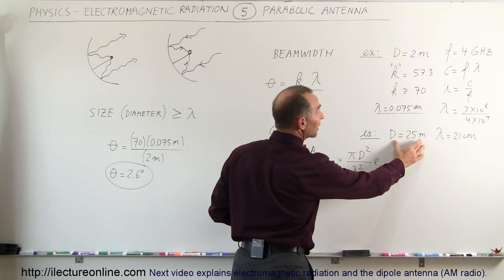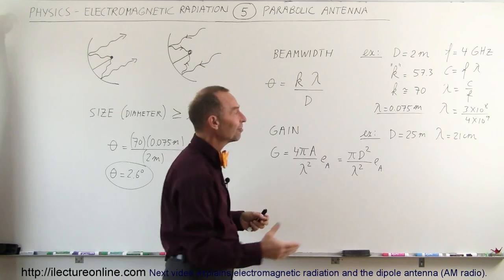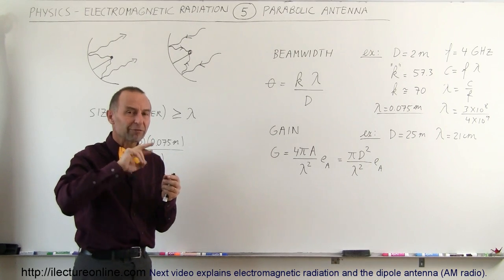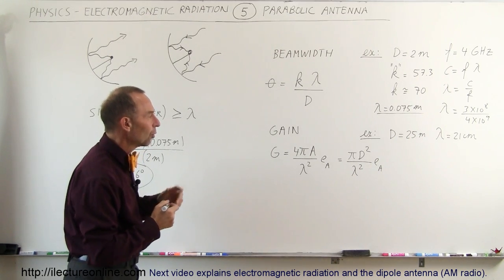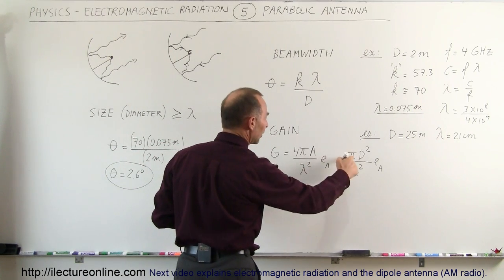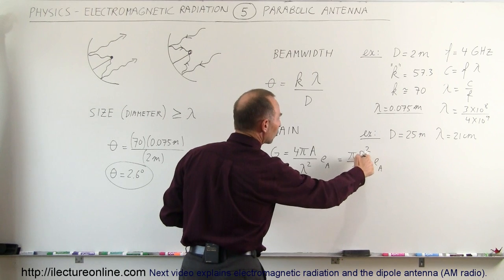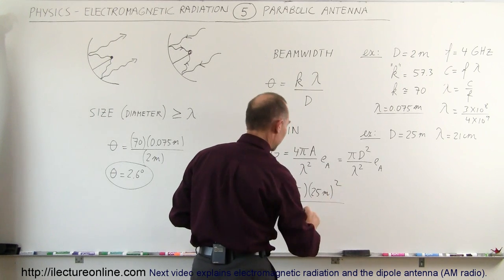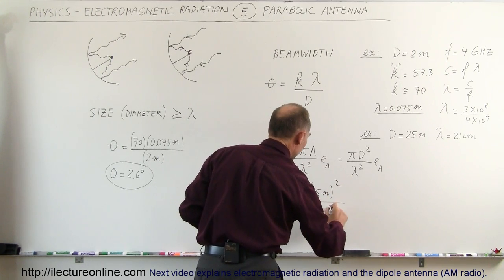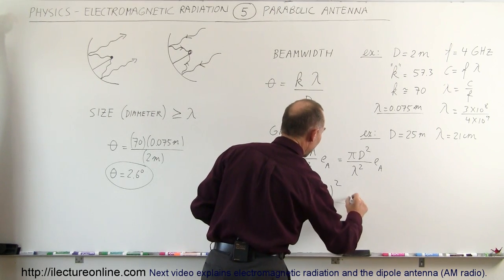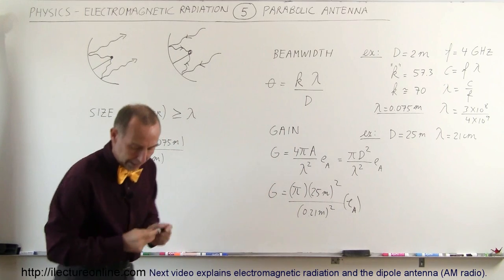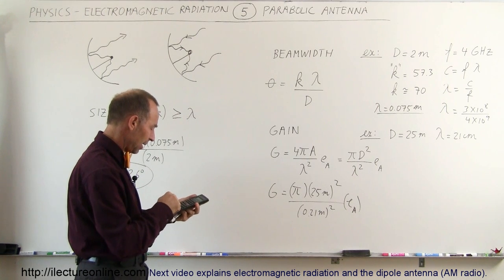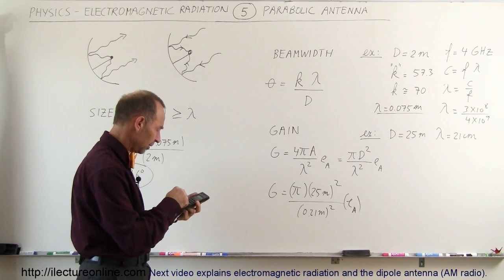Let's assume that we have an astronomy antenna, 25 meters in diameter, about 75 feet, and we're collecting wavelength of 21 centimeters which is the wavelength we receive from the spin flip of the electron in space. So the gain that we would get would be equal to π times the diameter squared - the diameter would be 25 meters squared - divided by the wavelength that we're collecting which is 0.21 meters squared, 21 centimeters, times the efficiency of the aperture, and for now we'll just call it 1.